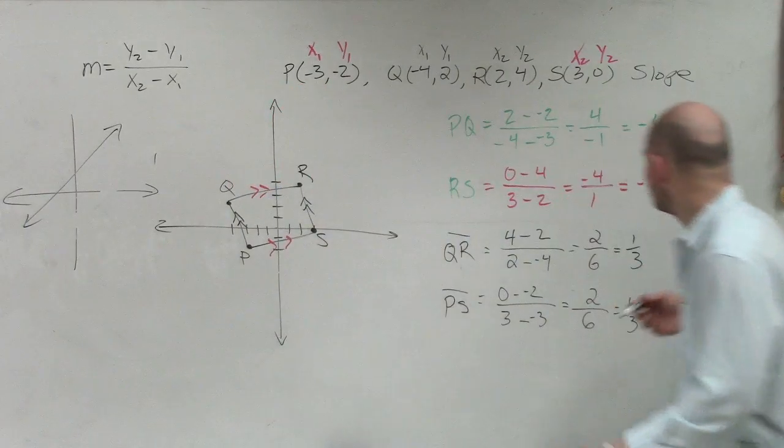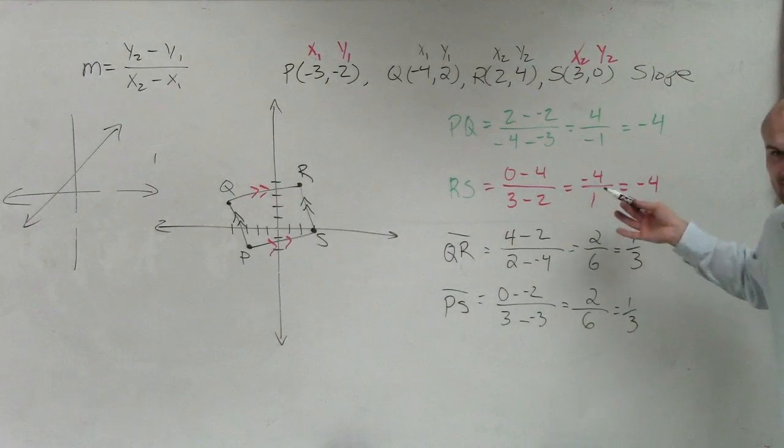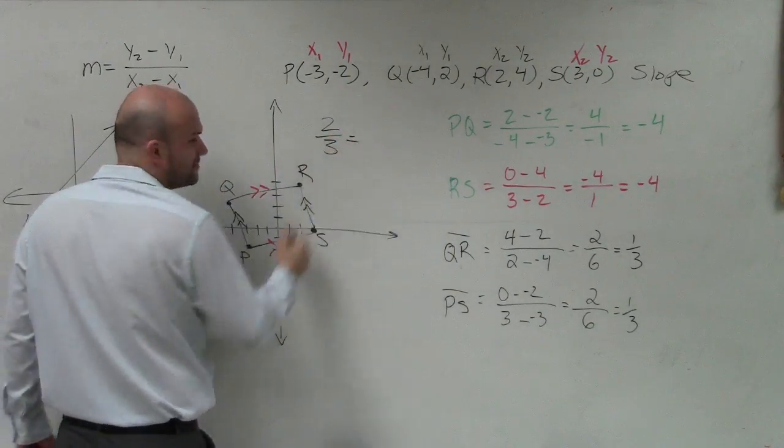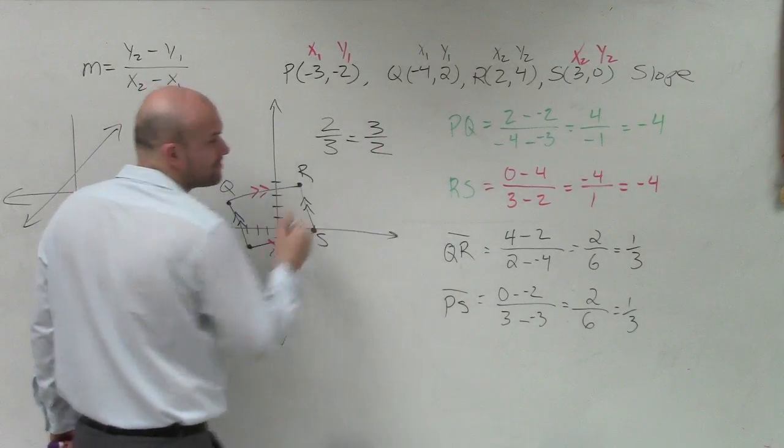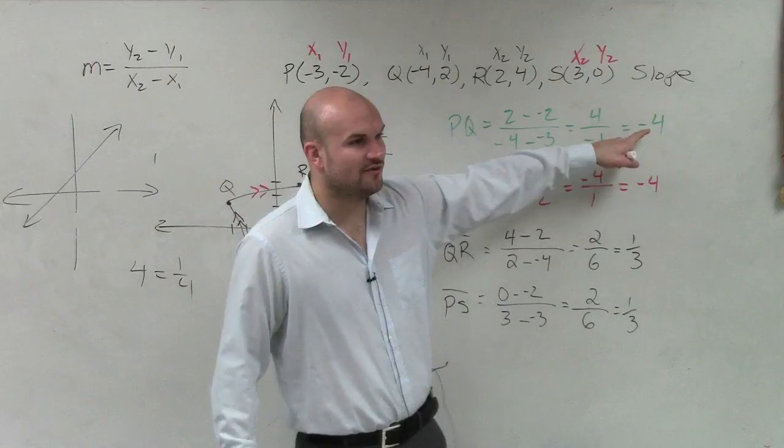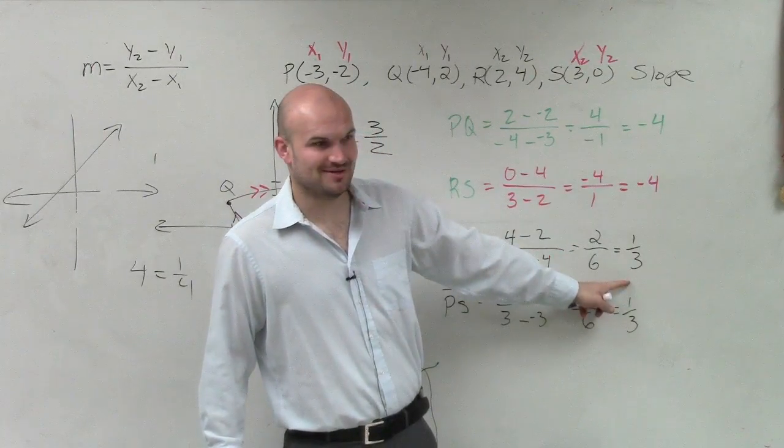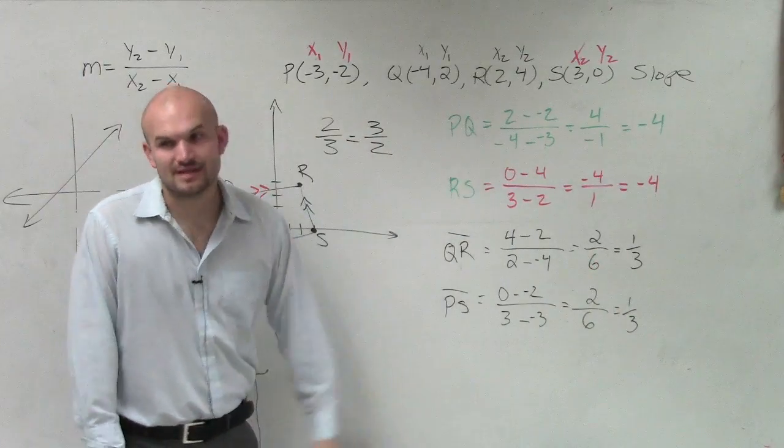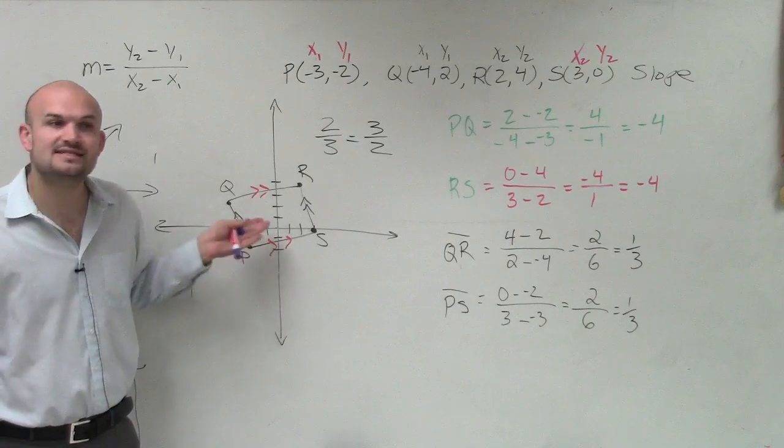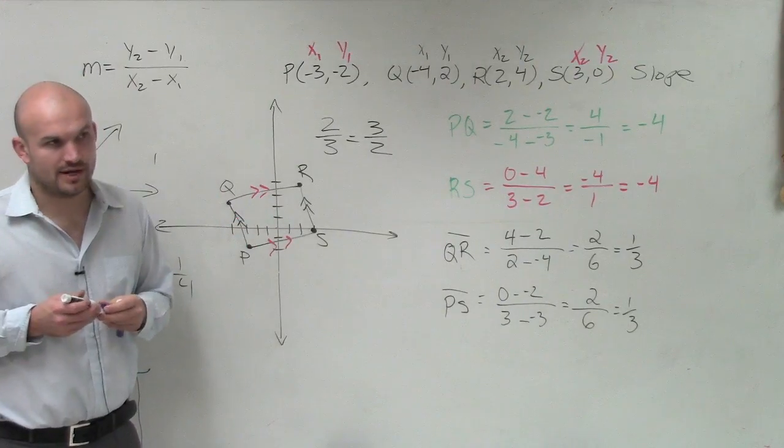Are these two slopes opposite signs? Is one positive, one negative? Yes, these are negative, these are positive. Are they reciprocals of each other? Is negative 4 the reciprocal of 1/3? What's the reciprocal of 2/3? The reciprocal of 4? 1/4. What's the reciprocal of negative 4? Negative 1/4. Is that our reciprocal? No. So guess what? This is not a rectangle. It looks like a rectangle, but it's not a rectangle. Because they don't make a 90 degree angle. This is only a parallelogram.